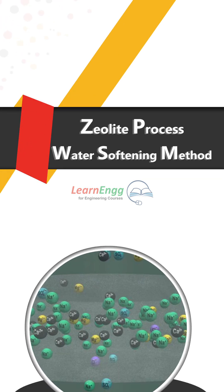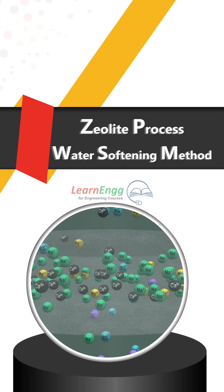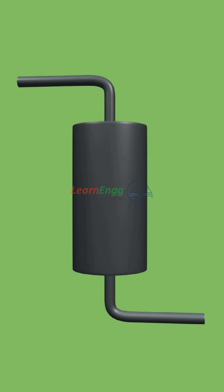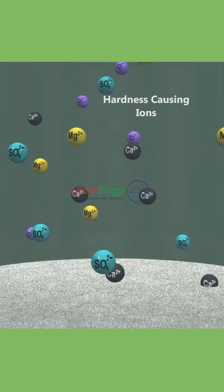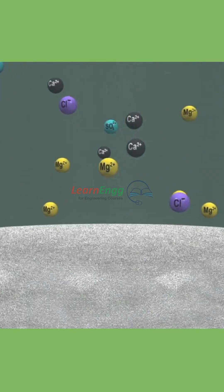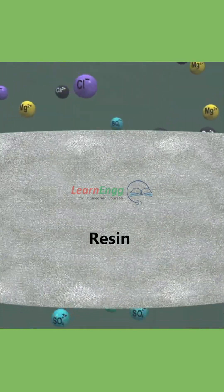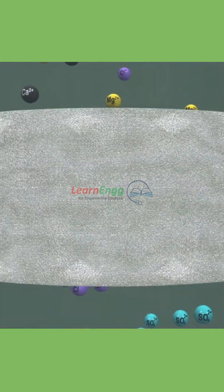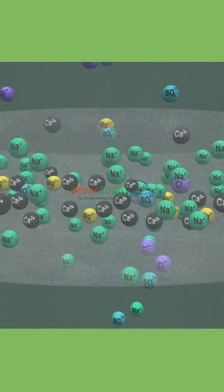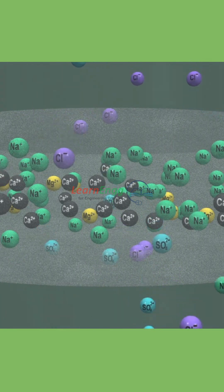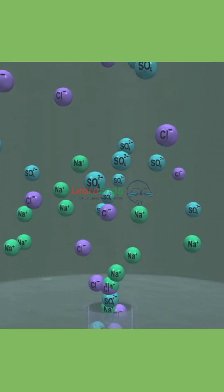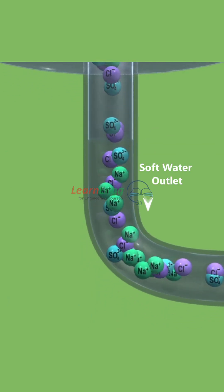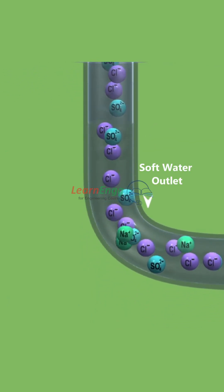Zeolite process: water softening method. The hard water is passed through the zeolite bed at a specified rate. The hardness-causing ions such as calcium (Ca2+) and magnesium (Mg2+) are retained by the zeolite bed as CaZ and MgZ respectively, while the outgoing water contains sodium salts.